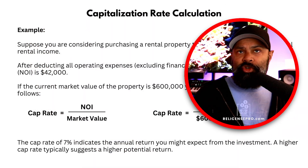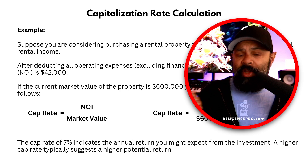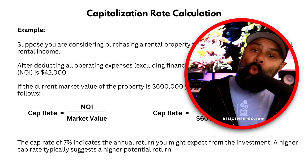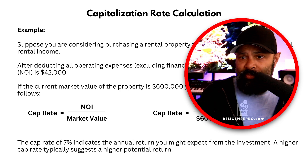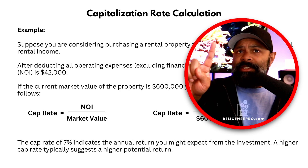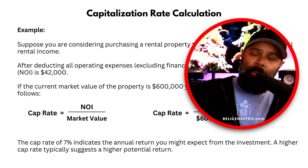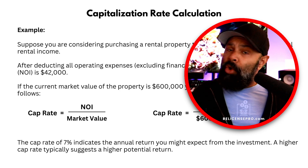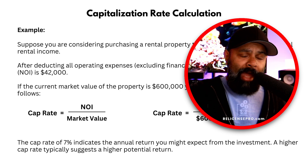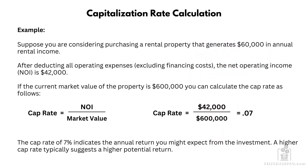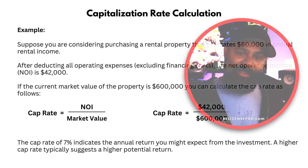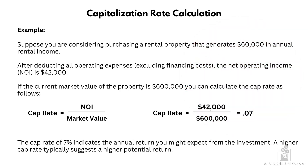If they give you a series of expenses as a sort of a trick, when figuring out cap rate, we exclude the mortgage payment — the debt service. They might list accounting, taxes, property management, and mortgage payments. Separate that one out, kick it out, and add up all the other expenses. Don't include the mortgage payment. One of the wrong answers — the red herrings — might include mortgage expenses as an operating expense. The mortgage payment is not an operating expense; it's debt service, so it's not calculated the same way in these calculations.